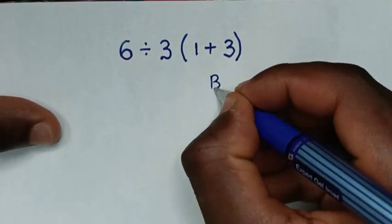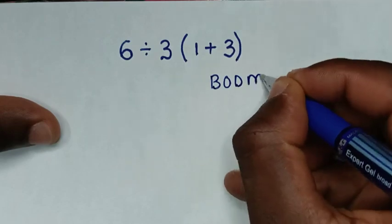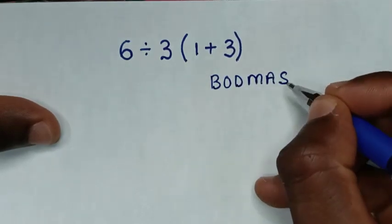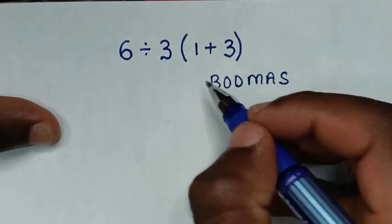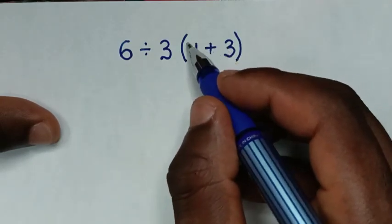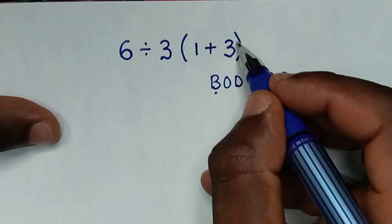So we write the rule which is BODMAS, whereas B bracket. In here we have bracket and operation inside the bracket is 1 plus 3 which is 4.